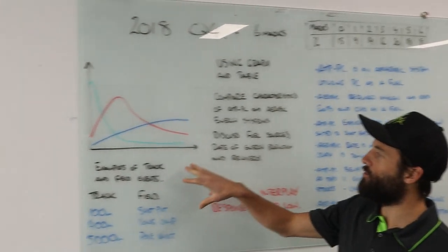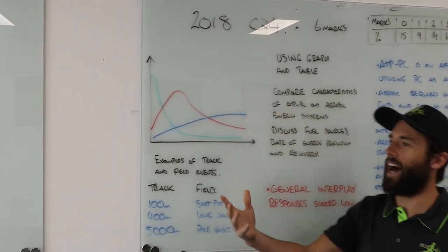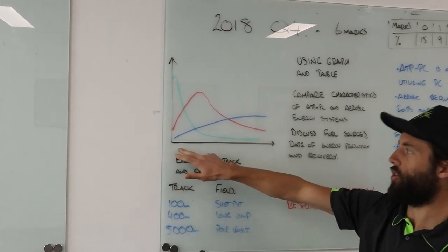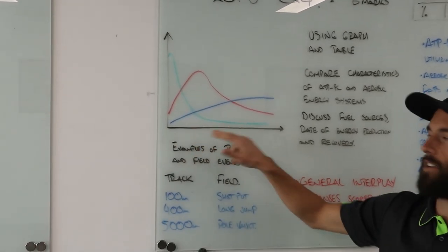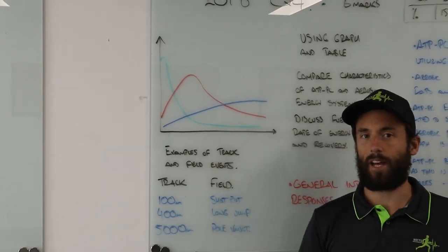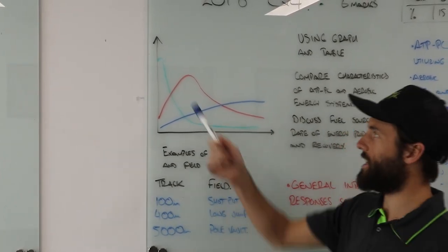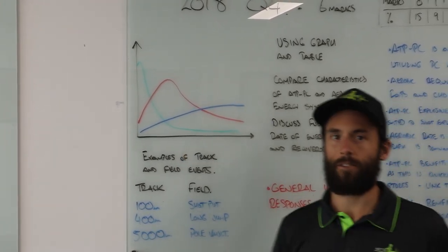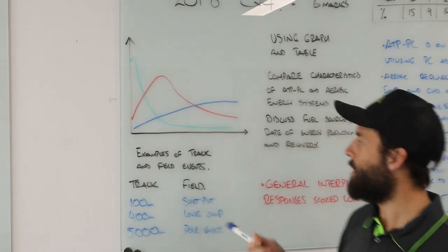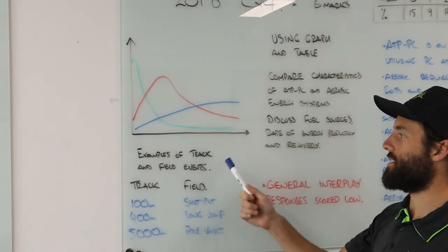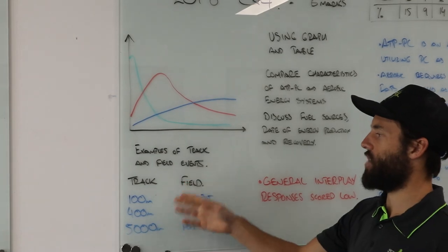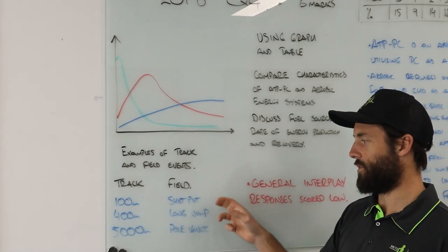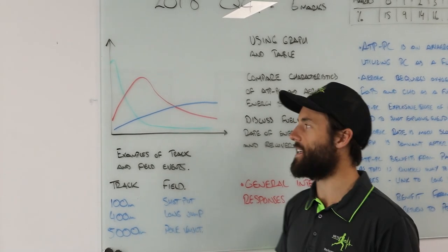When you get to this question, you've got two bits of data to lead into it. We've got this graph here in the exam. It does have time across the bottom, I think it's 10 second intervals. It's basically just our energy system interplay graph that we're used to in that maximal setting - our ATP-PC system, our anaerobic glycolysis, and then our aerobic energy system. We also get this table that gives us examples of track and field events. For track we've got 100 meter, 400 meter, 5000 meter, and for field events we've got shot put, long jump, pole vault. So this is our leading information.